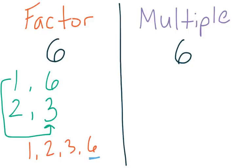Now let's take a look at multiples. Multiples are like skip counting for us. If we were finding multiples of 6 — and multiples can go on forever — our multiples are going to be our skip counting. We're always going to start with that number, 6, and then count up by 6.